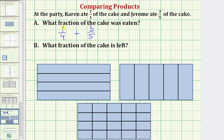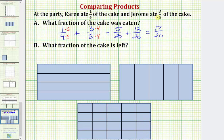To write the equivalent fraction for 1 fourth with a denominator of 20, we multiply by 5 over 5. To write the equivalent fraction for 3 fifths with a denominator of 20, we multiply by 4 over 4. This gives us 5 20ths plus 12 20ths, which equals 17 20ths. By obtaining a common denominator, we're cutting the cake into pieces of the same size so we know exactly how much Karen and Jerome each ate.